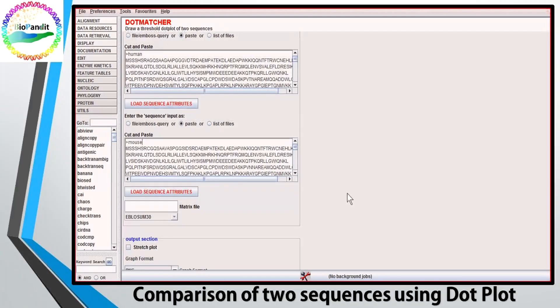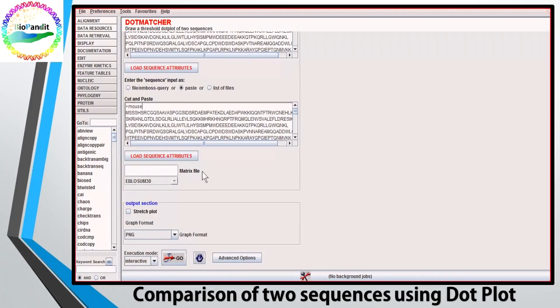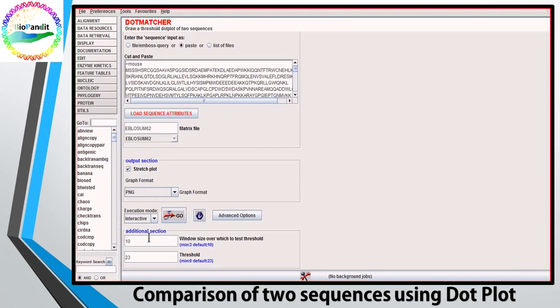Set your substitution matrix file. I am going to use BLOSUM62. Select stretch plot. Set the graph format to PNG. Go to advanced options. Set the window size to 100 and the identity threshold to 50%. Set the execution mode to interactive and hit the go button.